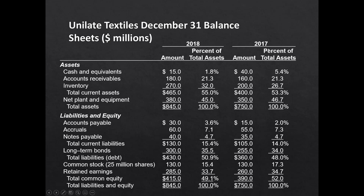In finance, you'll almost always see a comparative set of financials — both 2017 and 2018 — to compare Unilate's financial position year over year. We also use common sizing, expressing items as percentages of total assets — cash, accounts receivable, etc. — to compare companies of different sizes. Common sizing allows you to see changes between years and compare two companies with very different scale on an apples-to-apples basis.